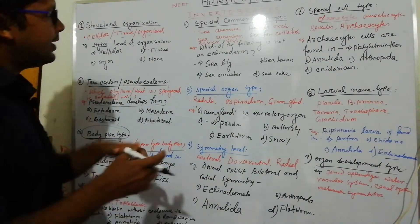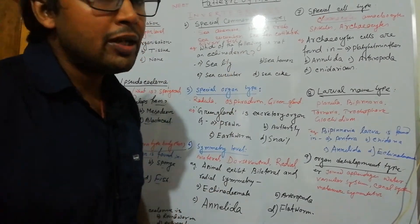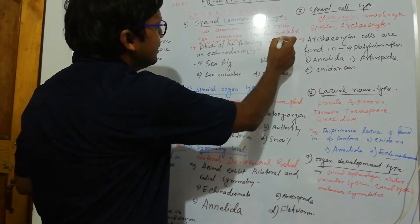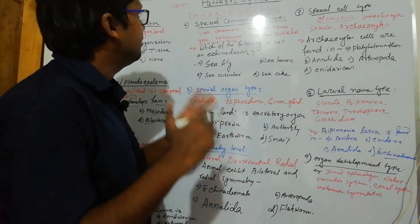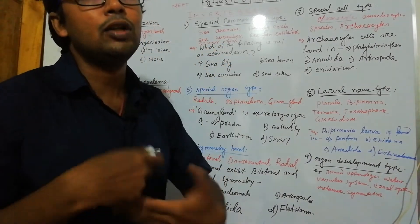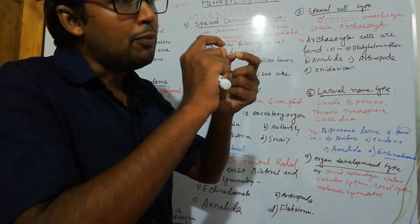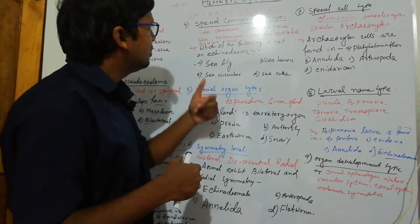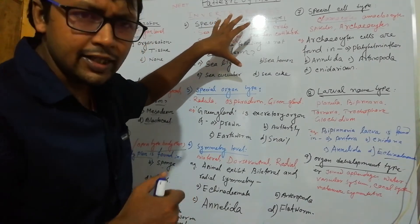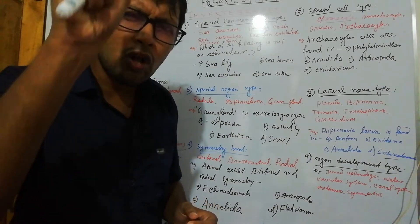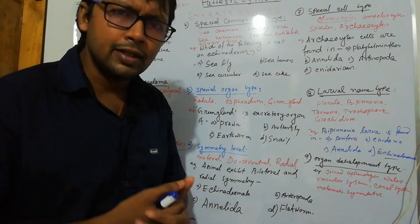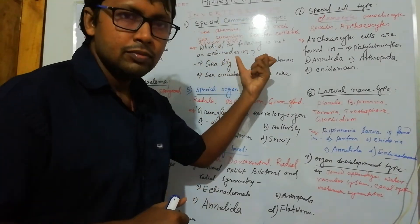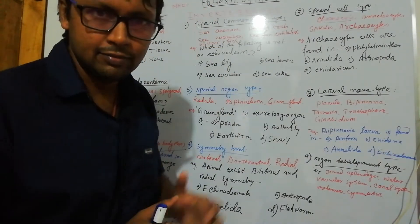Another pattern is special common name type. Examples: sea cucumber, hermit crab, sea anemone, sea fan, cuttlefish, devilfish, silverfish — these are all common name types. Questions are asked about which common name belongs to which phylum, or common names and scientific names may be mixed: sepia is cuttlefish, octopus is devilfish. You must remember these properly. Read all common names — I have already given common name types of invertebrates in my videos.